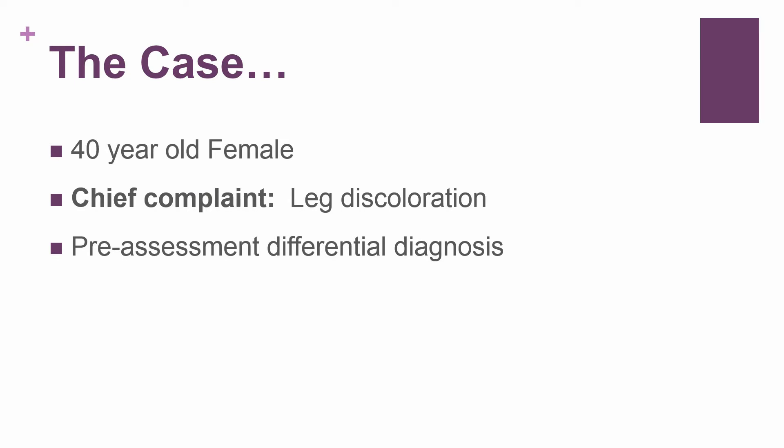The case is centered around a 40-year-old female who came in with a chief complaint of leg discoloration. This allows us to start thinking immediately of our differential diagnosis — is it cellulitis, a DVT, stains from her jeans? And so we have an idea before we even go into the room about the questions we want to ask and the exam we want to do.